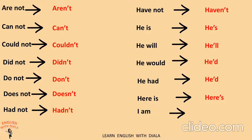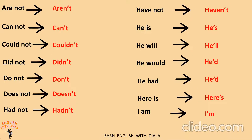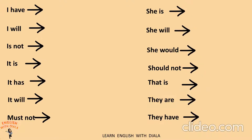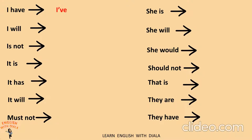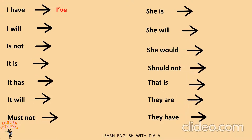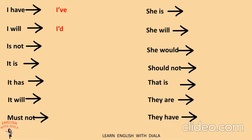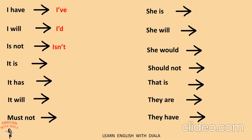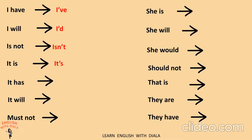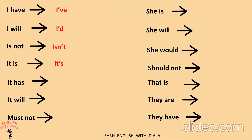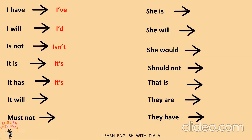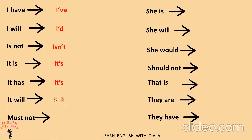I am — I'm. I have — I've. I will — I'll. Is not — isn't. It is — it's. It has — it's. It will — it'll.